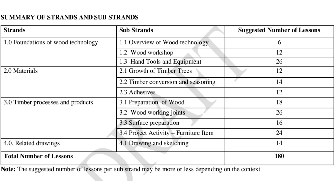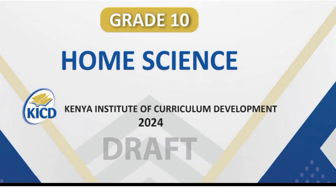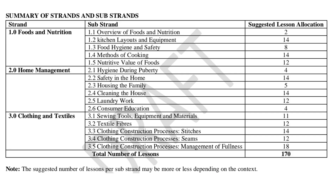The last learning area under STEM pathway is home science. The first strand is food and nutrition, covering: overview of food and nutrition, kitchen layout and equipment, food hygiene and safety, methods of cooking, and nutritive value of foods. The second strand is home management, covering: hygiene during puberty, safety in the home, housing the family, cleaning the house, laundry work, and consumer education. The third strand is clothing and textiles, covering: sewing tools, equipment and materials, textile fibers, and clothing construction processes including stitches, seams, and management of fullness — totaling 170 lessons.